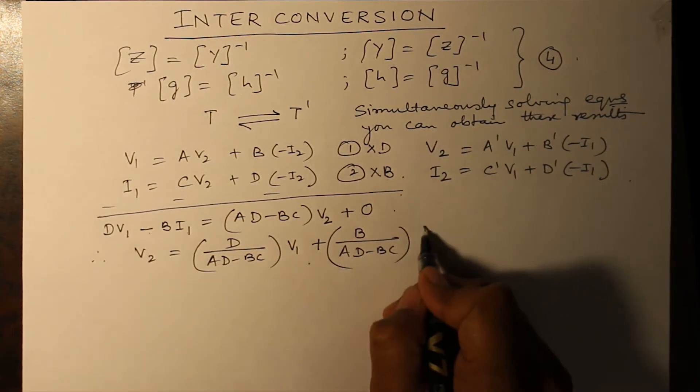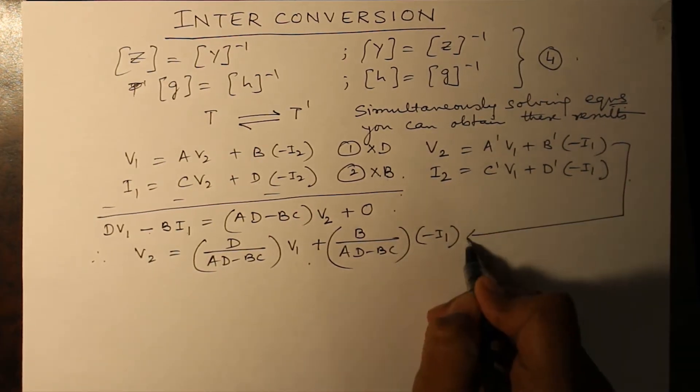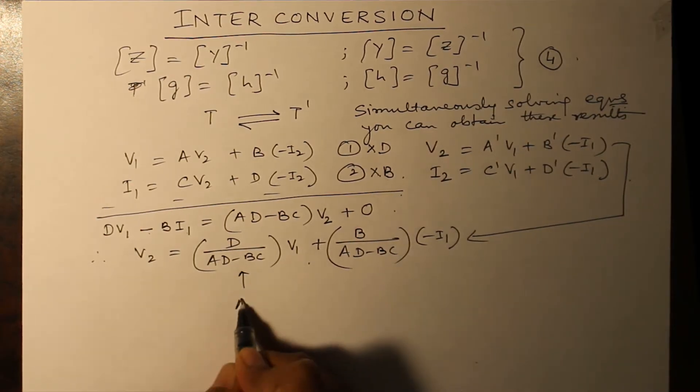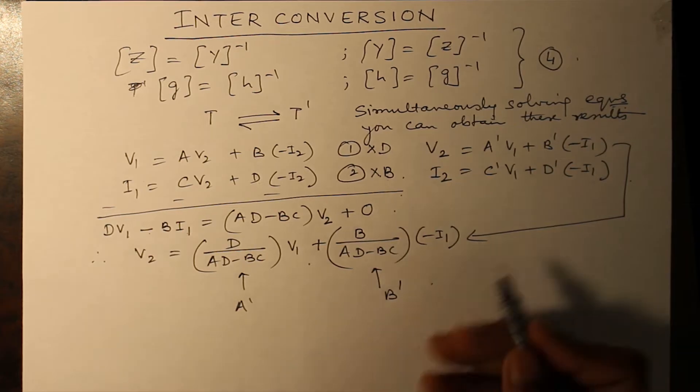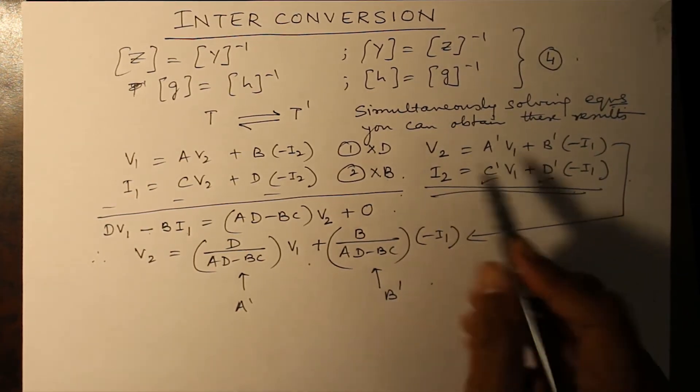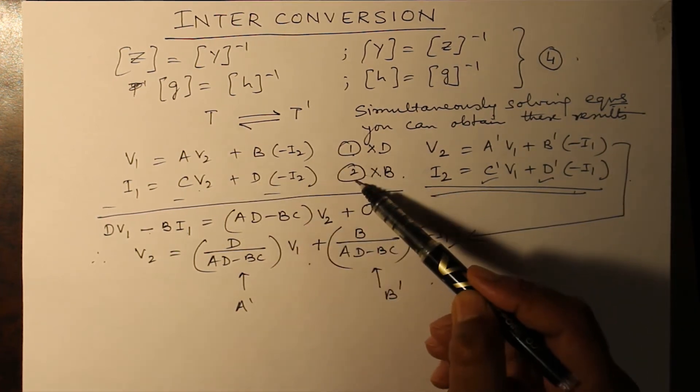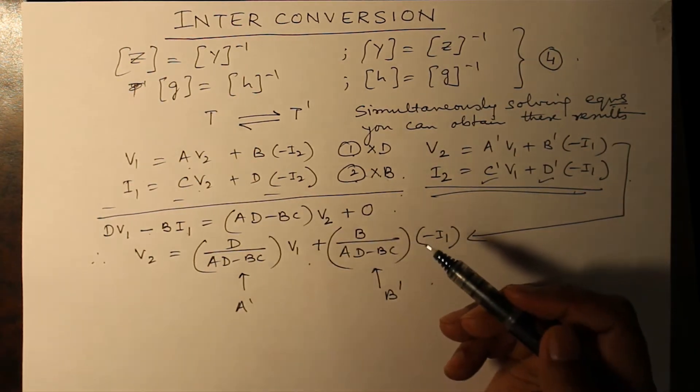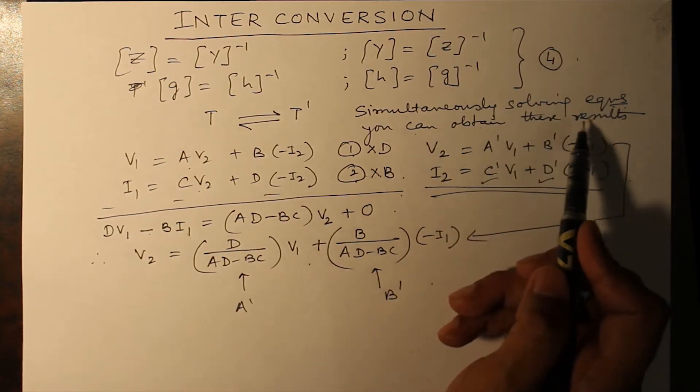This minus sign is brought along with minus of I1. This has been done so that these two equations can be compared. This is A dash and this part is B dash. Similarly, you can find out C dash and D dash by multiplying equation one with C, equation two with A, and subtracting and finding out the result. This is the meaning of simultaneously solving the equations.